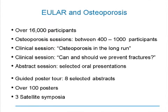A little bit about EULAR: over 16,000 participants gathered together in London. There were five osteoporosis sessions drawing attention of about 400 to 1,000 participants. There were two clinical sessions — one called 'Osteoporosis in the Long Run,' dealing with when to stop bisphosphonate treatment and how to improve patient compliance, and the second about whether we can and should prevent fractures, dealing with FRAX measurements, risk factors, and rheumatic diseases. These sessions featured invited speakers giving a good state-of-the-art overview.